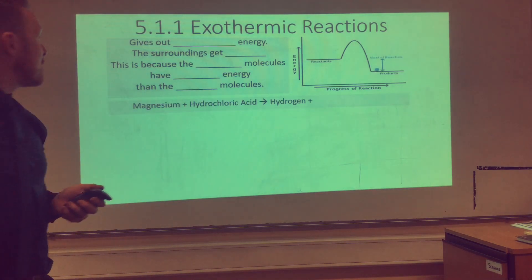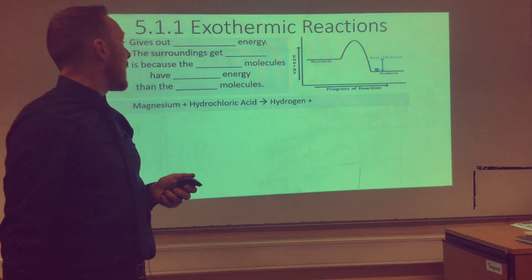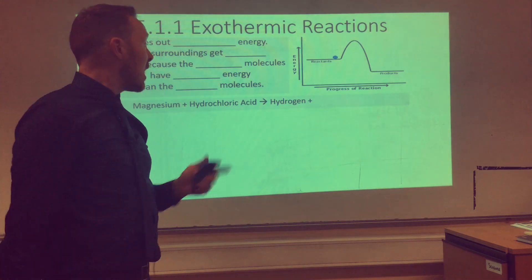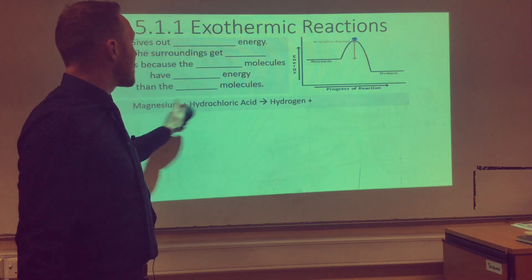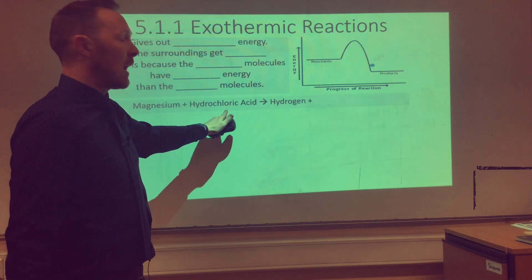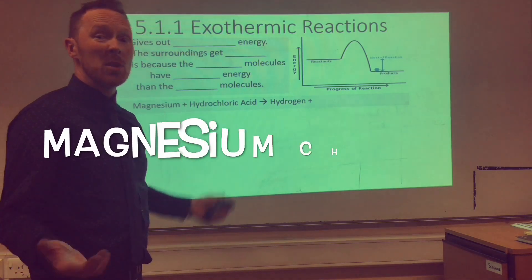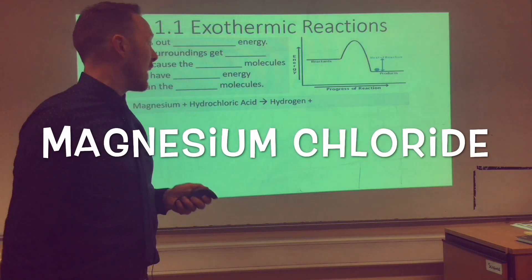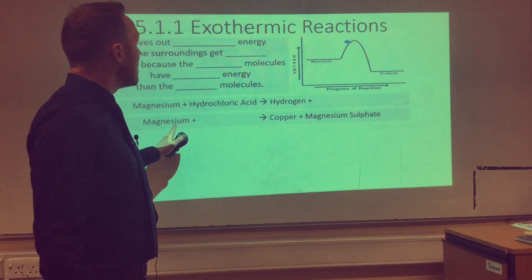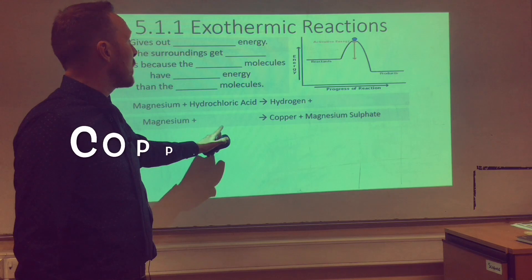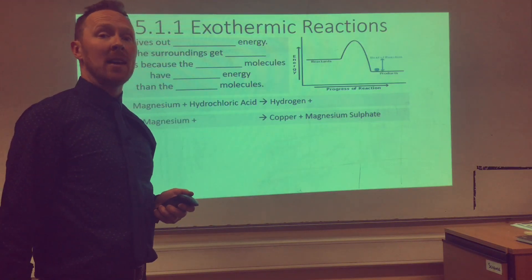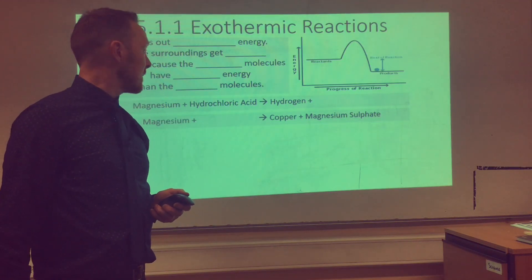An example of this is magnesium reacting with hydrochloric acid. The products are hydrogen and the salt magnesium chloride. Another example is a displacement reaction: magnesium reacting with copper sulfate to produce copper and magnesium sulfate.